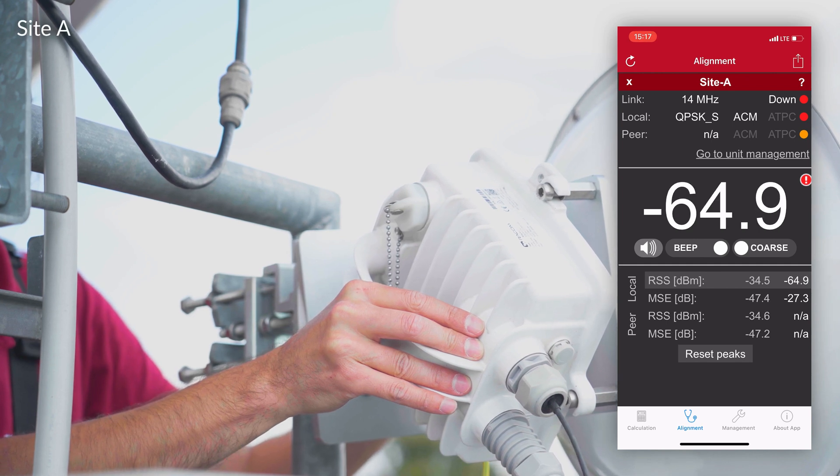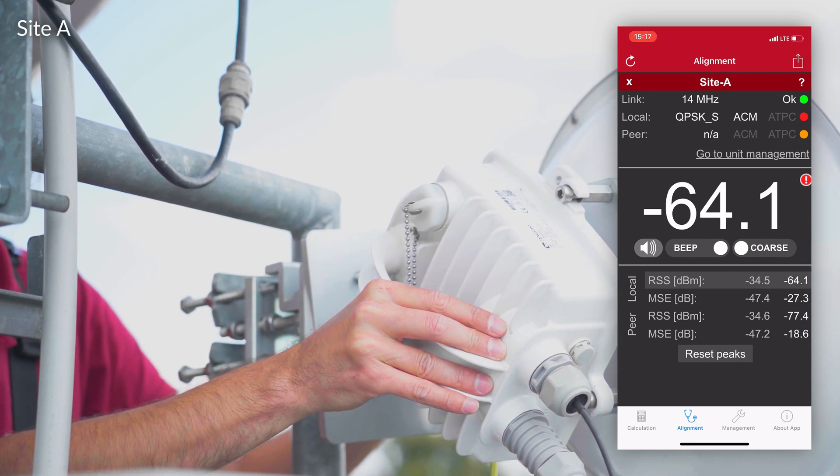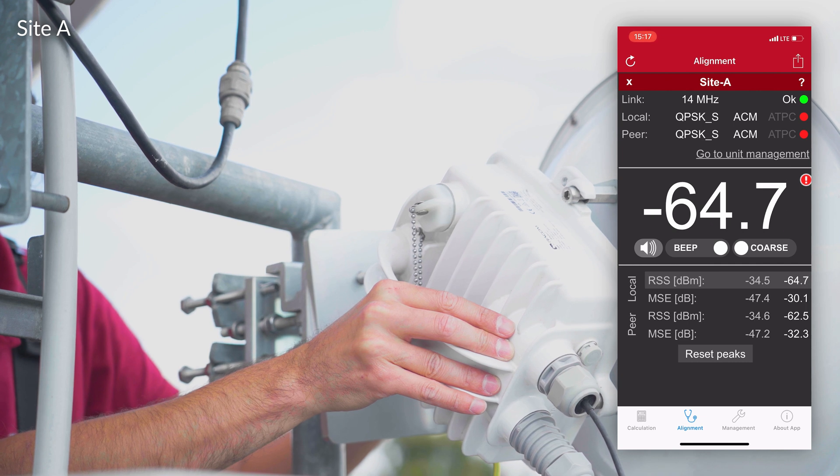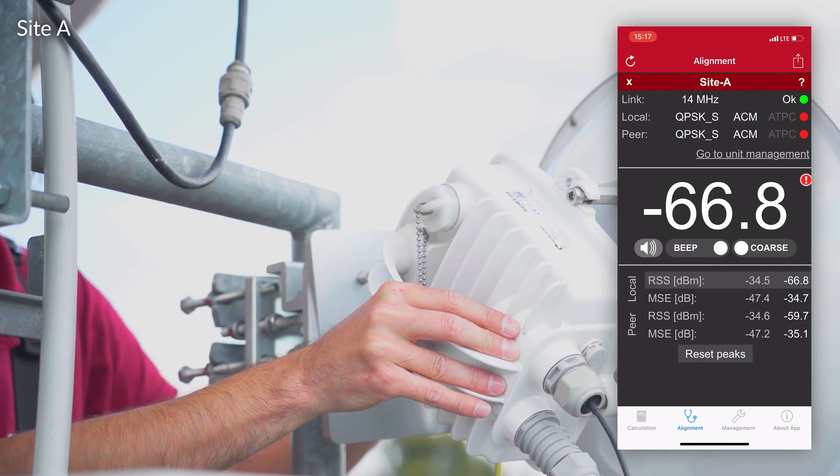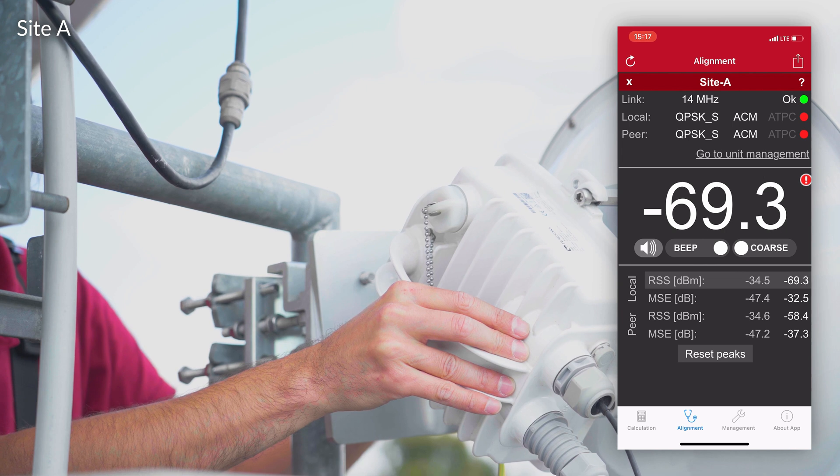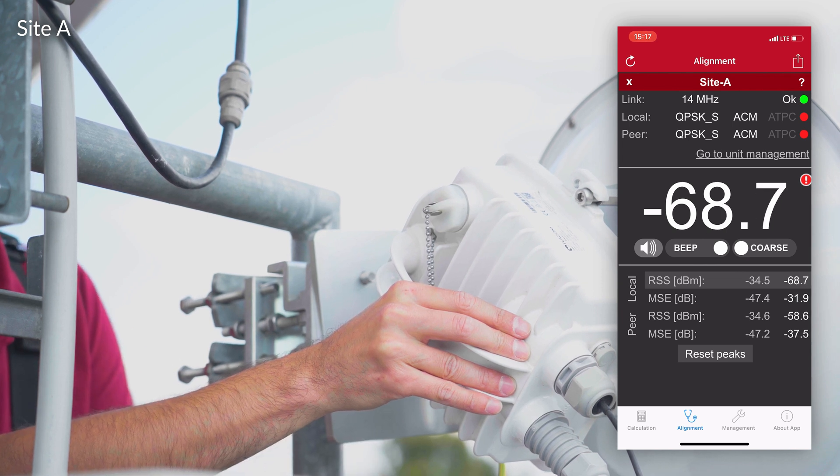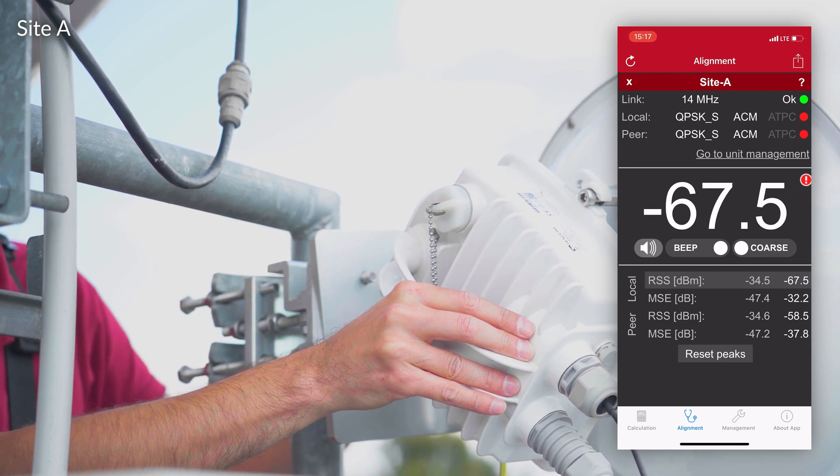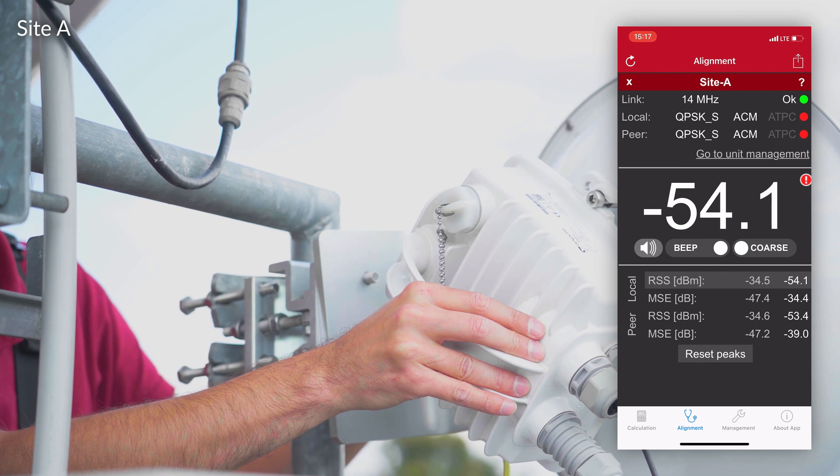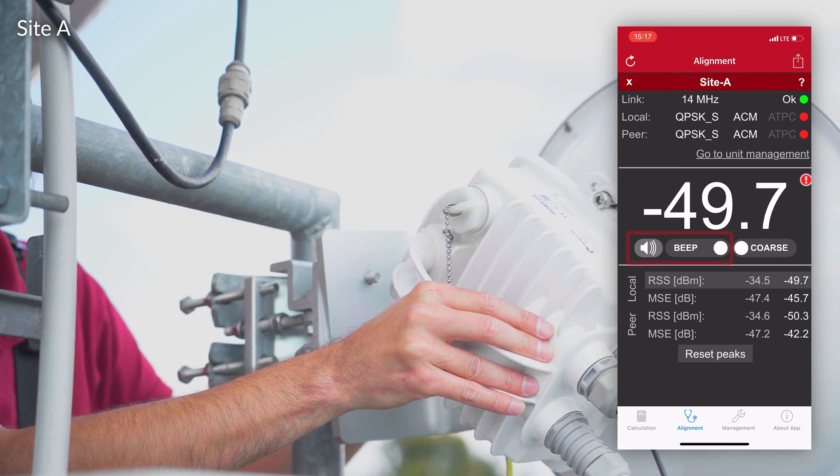Let's start on site A for the initial alignment. Michal will use our Ray Tools app on this site. Aligning with the app is quick and straightforward, with the added benefit of not having to carry a voltmeter with you. It also allows you to have both hands free thanks to acoustic output.